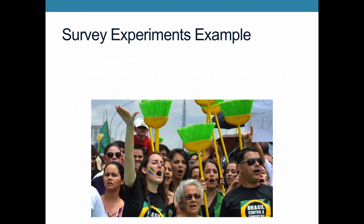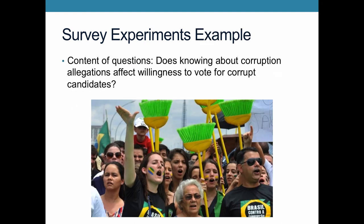Here's an example — a content-of-questions survey experiment from Brazil involving an anti-corruption movement. Some researchers did a survey experiment where they asked whether knowing about corruption allegations affected people's willingness to vote for corrupt candidates. They asked people about their willingness to vote for certain candidates and how important corruption was to them. For the treatment group, they informed people about accusations of corruption against specific Brazilian politicians, then asked how willing people were to support those politicians. For the control group, they just asked questions about how important corruption is to them. The idea is testing how much knowledge itself affects willingness to vote for corrupt candidates.